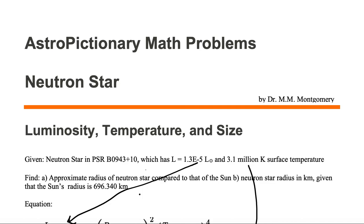A neutron star is much smaller than a white dwarf. A white dwarf is about the size of planet Earth, while a neutron star is about the size of a city on planet Earth.